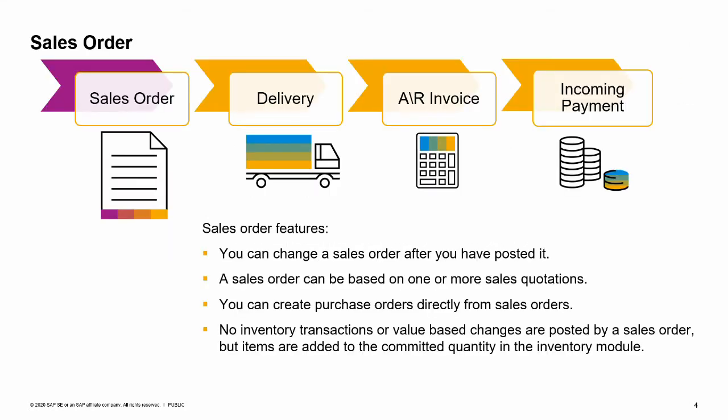The sales order is an important document — it tells everyone to get busy filling that order. As such, this document is important for planning production, creating purchase orders, and scheduling resources. You can change a sales order, changing quantities, updating prices or discounts, and so on after you have posted it. This is possible as long as you have made the appropriate settings in document settings and the sales order is still open.